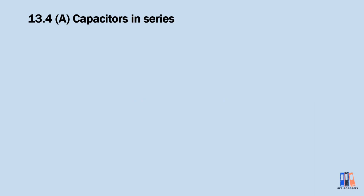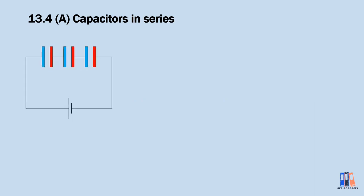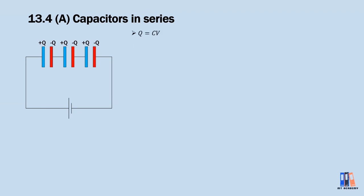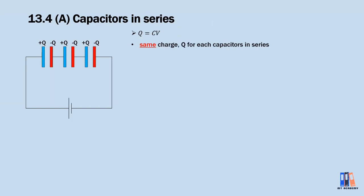In the last video, we have seen how a single capacitor is charged by the battery. The electrons flow from the negative terminal of the battery to charge one of the plates of the capacitor, and then induce positive charge on another plate. This process will continue until all the capacitors are charged. We have the formula Q = CV. There are three parameters we should carefully observe. The first thing is about the charge — capacitors in series have the same charge.